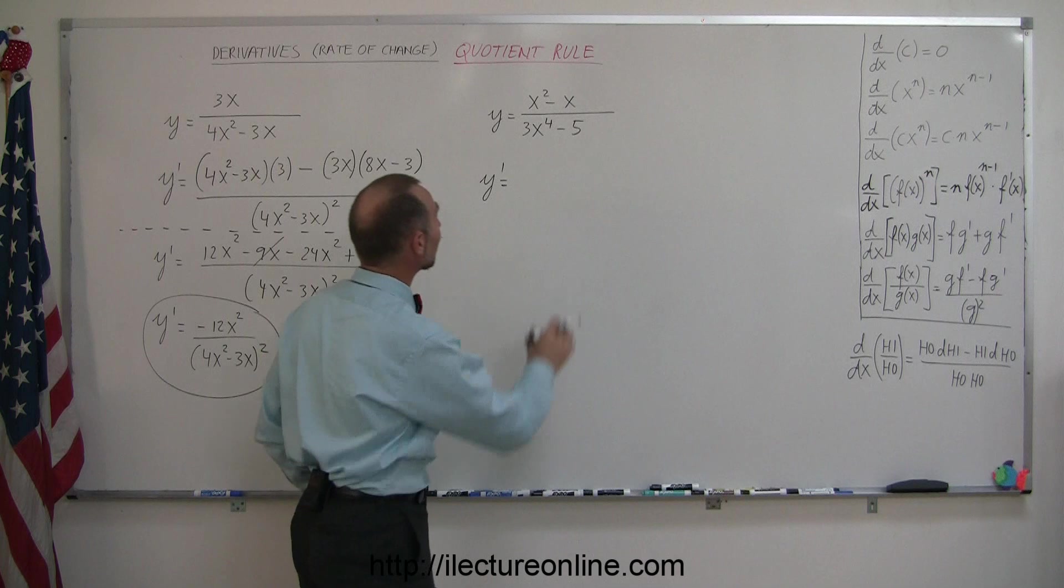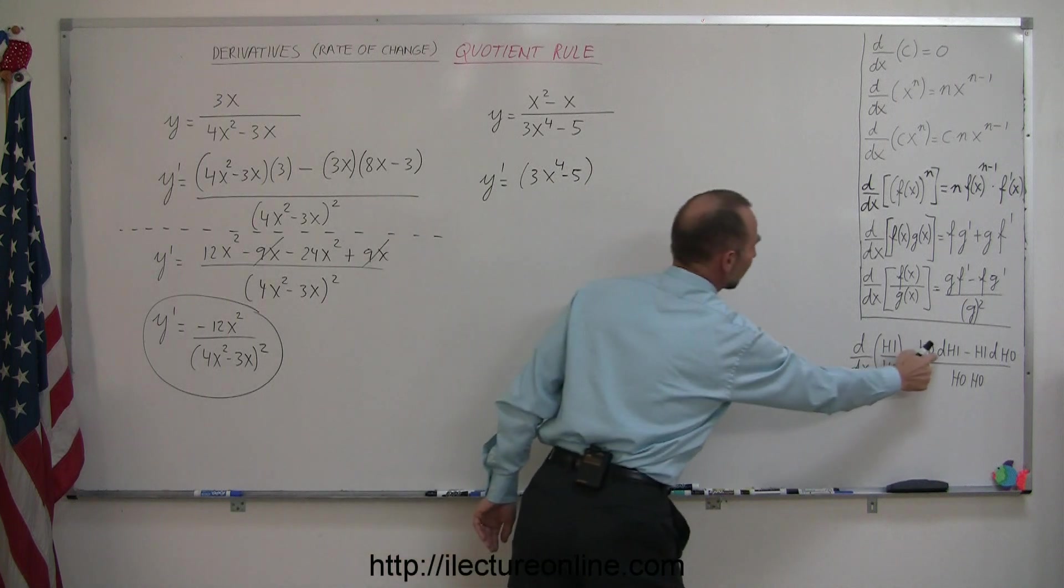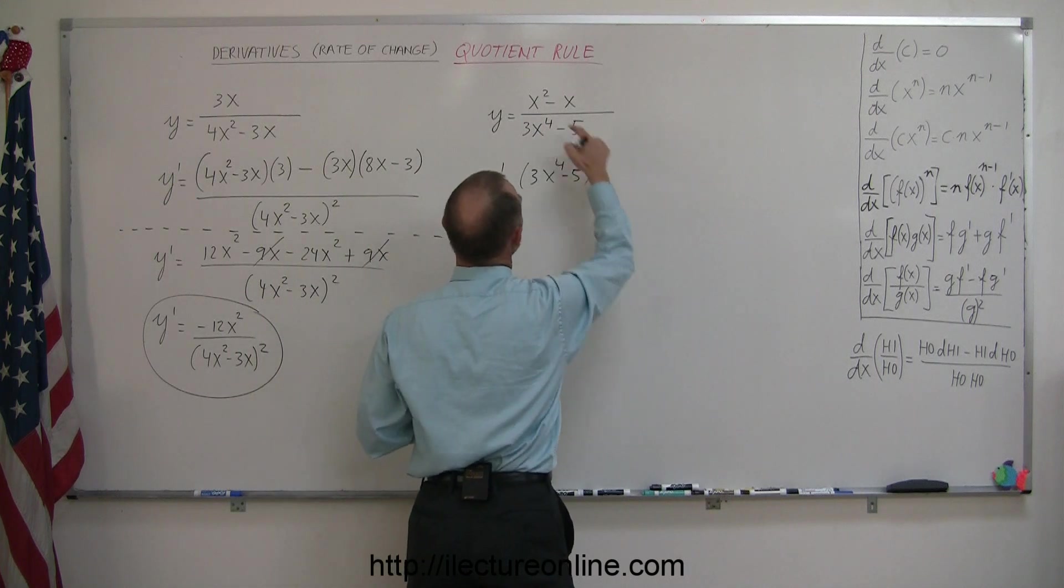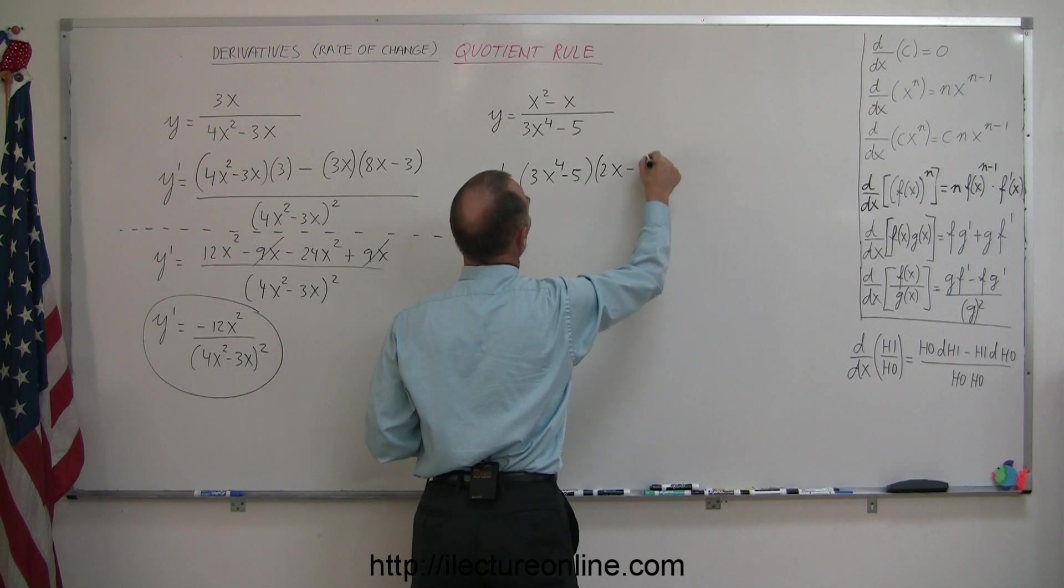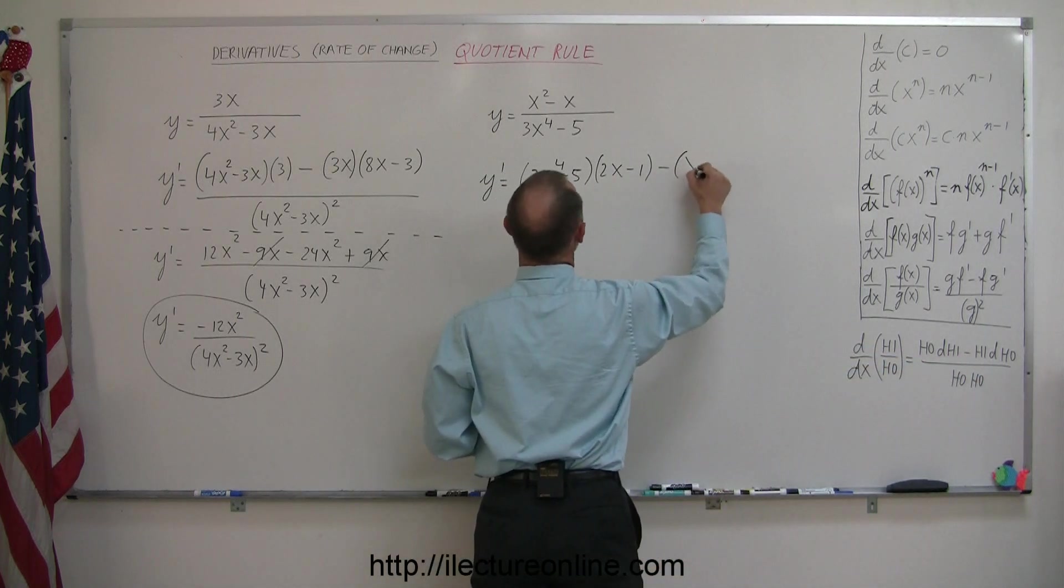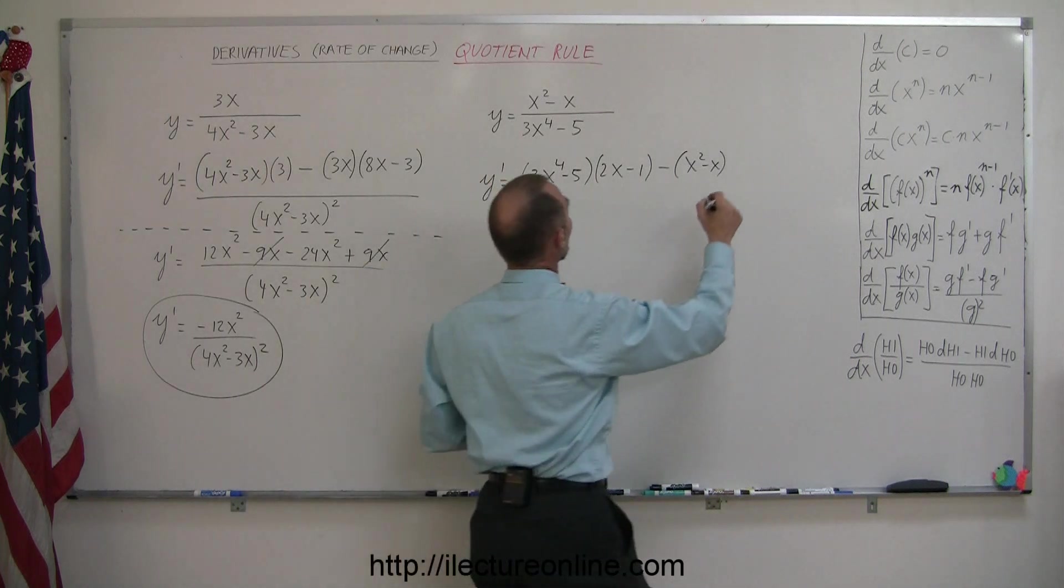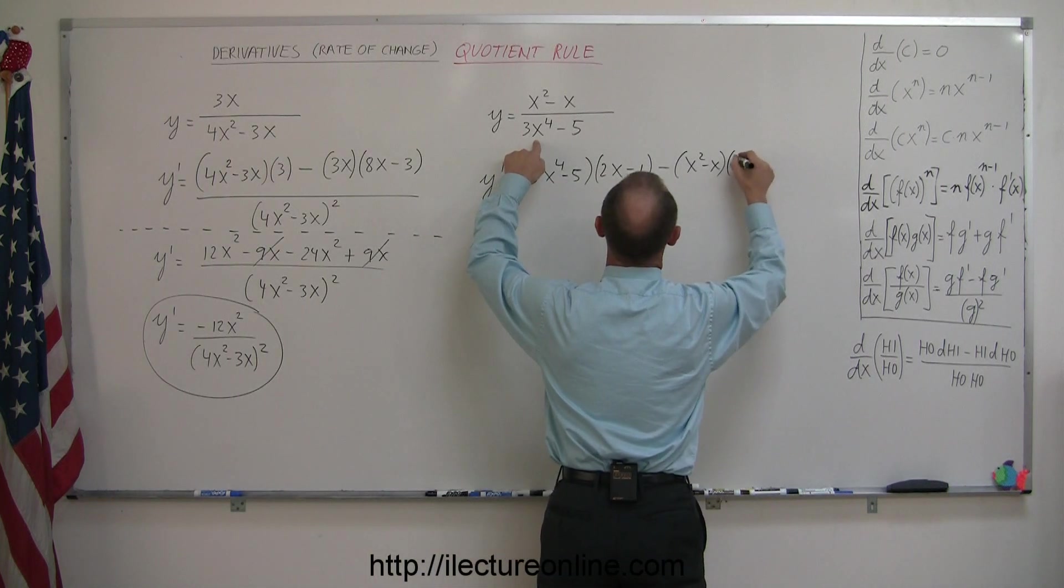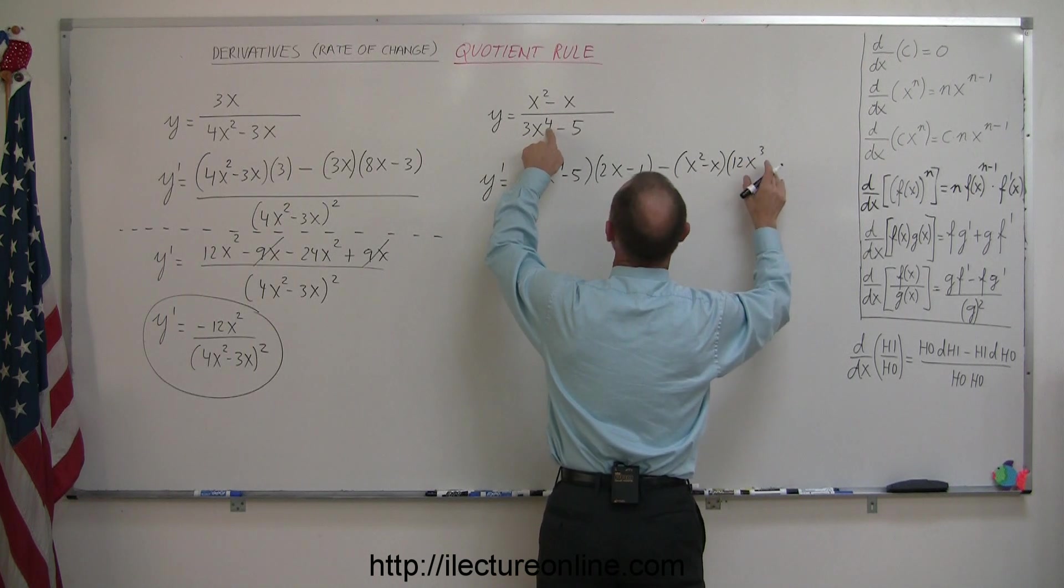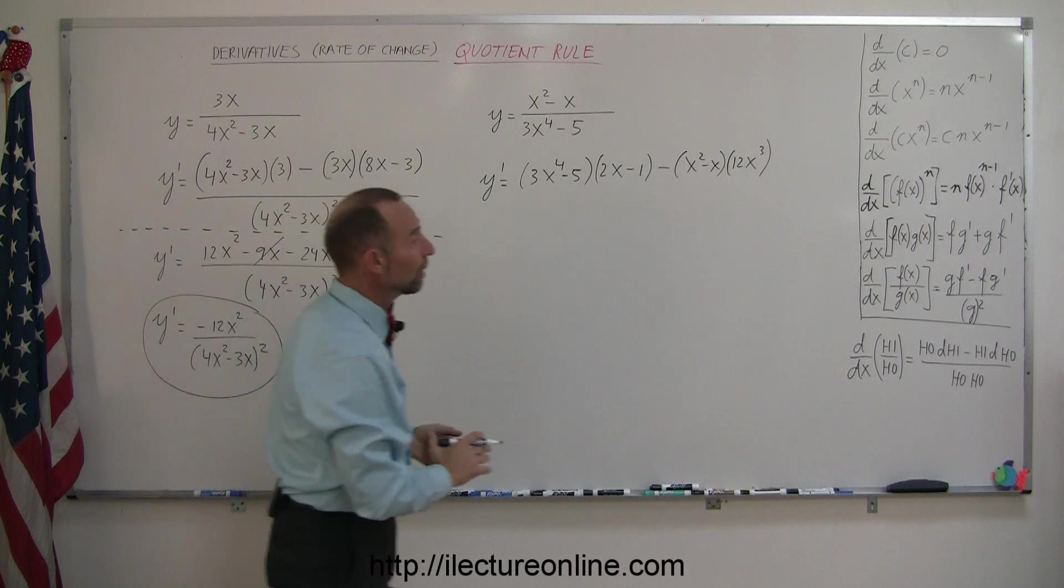the function in the denominator 3x⁴ - 5, d-hi means the derivative of what's hi, the numerator, so that's 2x¹ - 1, minus hi, the function in the numerator, x² - x, times d-ho meaning derivative of what's in the denominator, the derivative of 3x⁴ is 12x³. Multiply this times this, you get 12, subtract 1 from the exponent. The derivative of a constant is zero so that drops out.